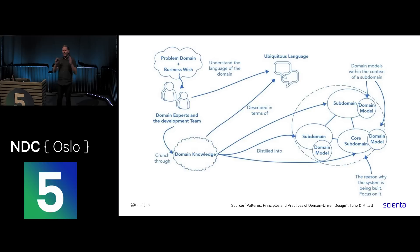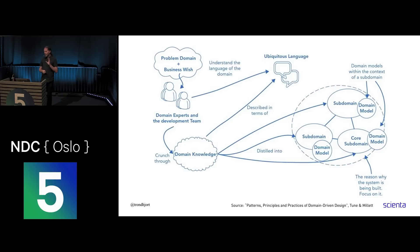Then you start modeling. First, you find out what sorts of domains you have: what is the core domain, what is the supporting domain, what's the generic domain. These terms just say how important each domain is to the business. As I said earlier, focus on the core domain. Then you start modeling and creating ideas for how you can solve things for every domain. And here we are into the bounded context — those models within the subdomains are within that bounded context. That model is only valid within that context.